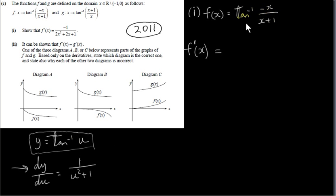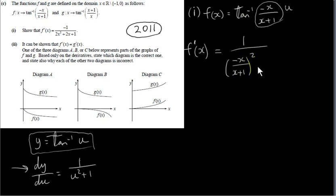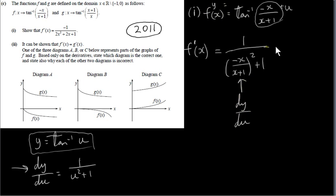We start by treating the entire fraction minus x over x plus 1 as u, and plug it into the derivative formula. So we get 1 over (minus x over x plus 1) squared plus 1. That's the dy/du part. Then we multiply by du/dx, which requires differentiating minus x over x plus 1 with respect to x. Since u is a quotient, we use the quotient rule.